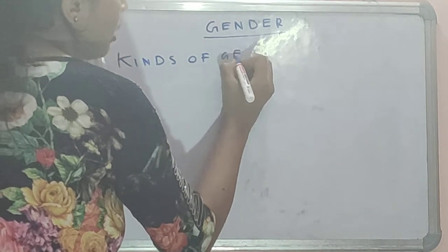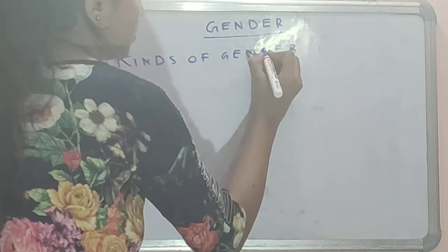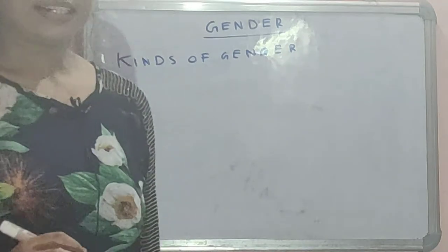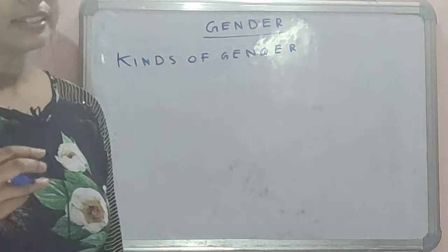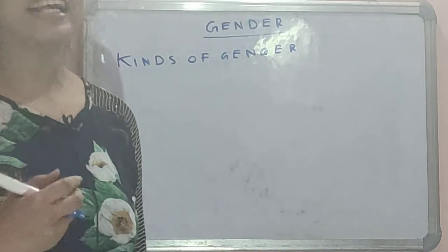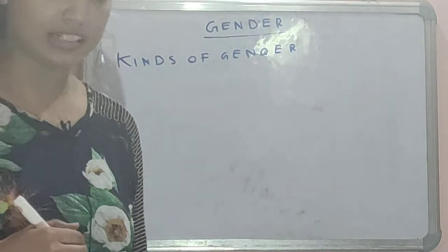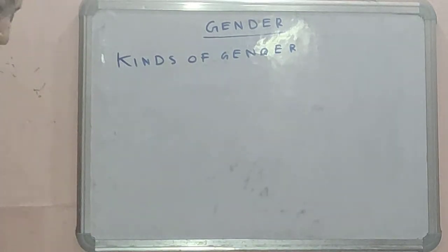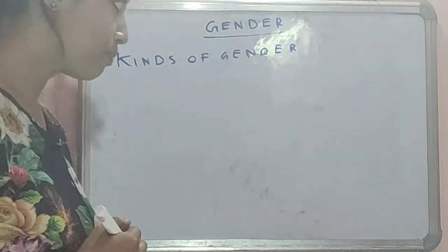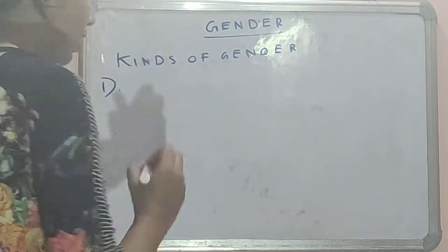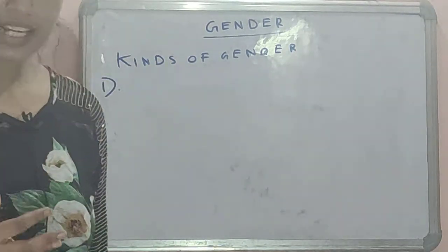We commonly know there are two types of gender, that is male and female. But other than male — which is masculine — and female — which is feminine gender — there are two more genders we have to know, that is common gender and neuter gender.